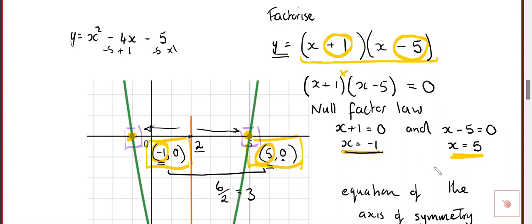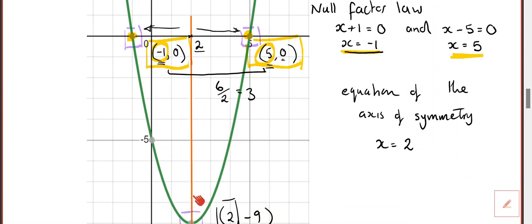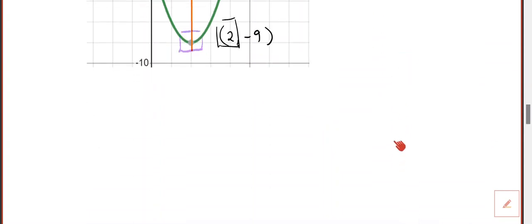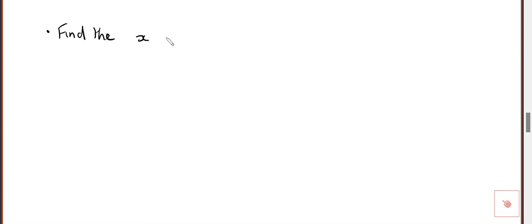So what we want to be able to do is: given an equation, find the x-axis intercepts, then the axis of symmetry, and then the vertex, in order. The axis of symmetry is the line that goes through the middle of the parabola — not the y-axis, but the one that goes through the middle of the parabola. We can find that. So let's find the x-axis intercepts, then the axis of symmetry, and the vertex.